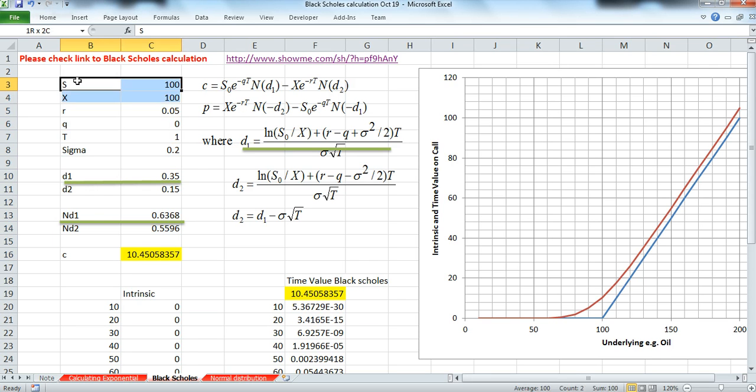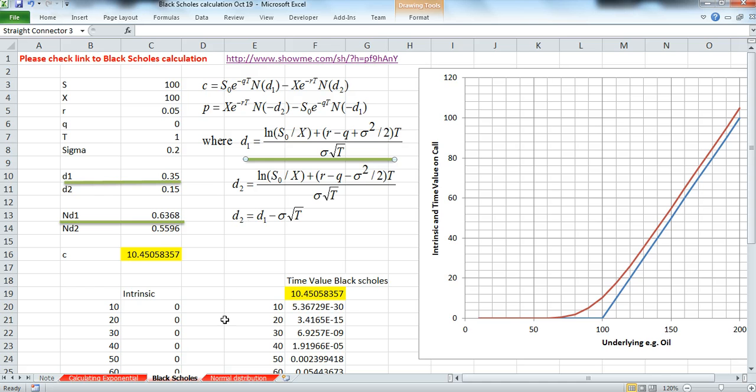If the parameter values were given as follows and d1 was calculated as 0.35 based on this formula here, then to read the value from the tables, the normal probability value, I could either use norms dist